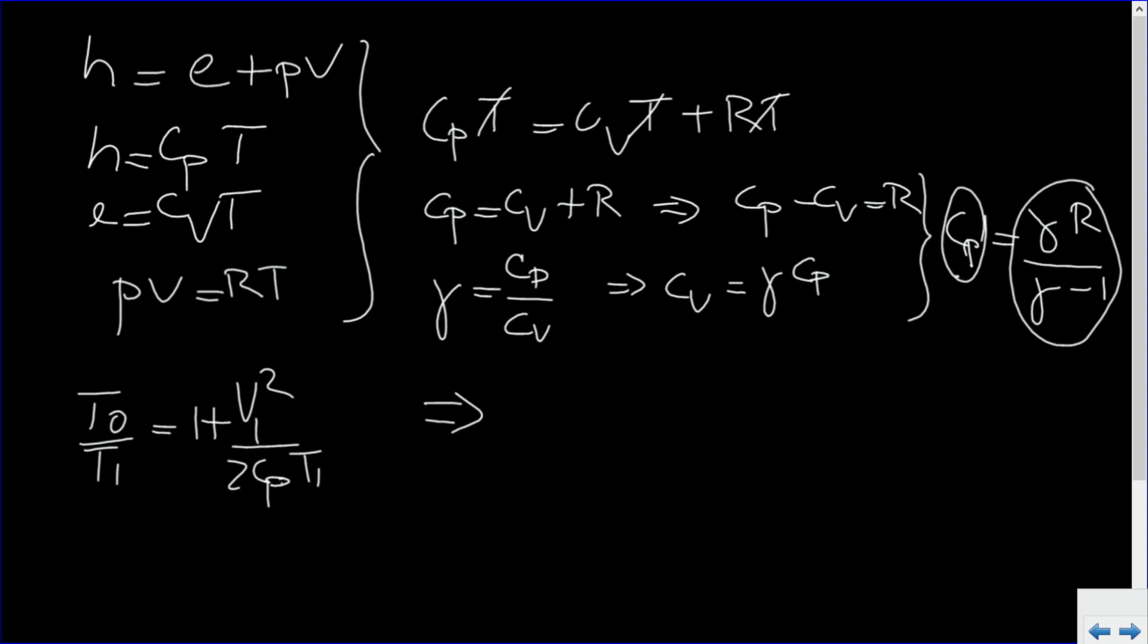Then it follows that T0 divided by T1 is 1 plus gamma minus 1 divided by 2 V1 squared divided by gamma R T1.